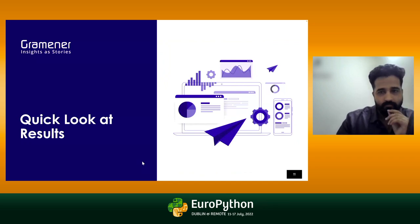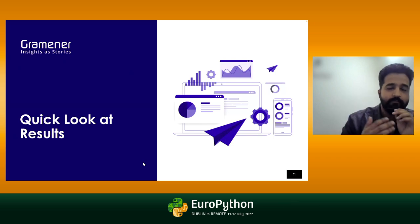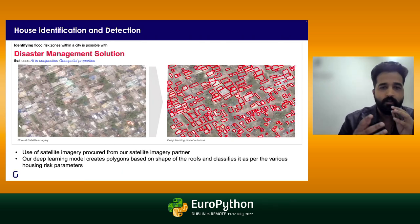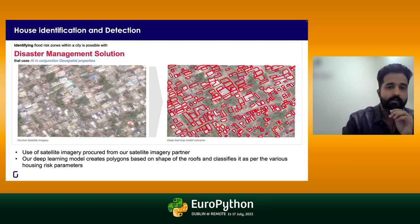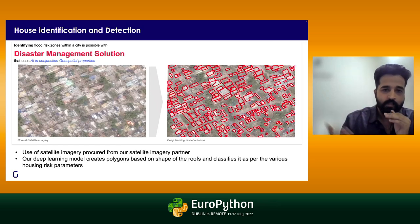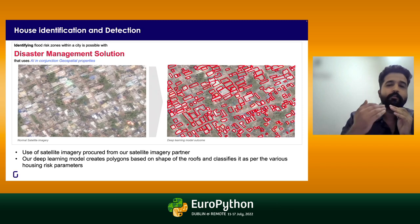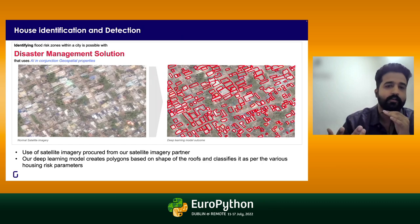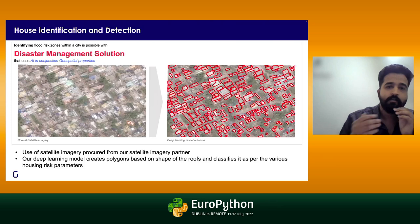Now let's take a quick look at results, and I will skim through the Python code snippets. For building footprint extraction, we take a high-resolution imagery to identify where the building footprints are and the roof type of the building. In countries like India, there are different roof types present across different geographies based on seasons. We included more than 10 to 12 roof types, then identified building footprints for that particular area.